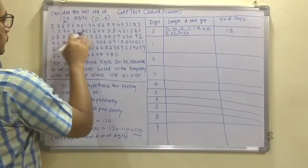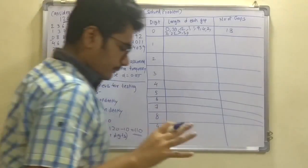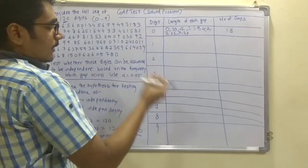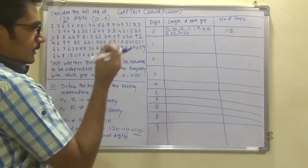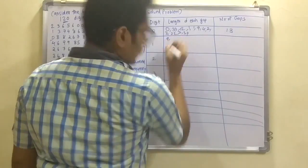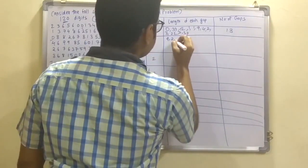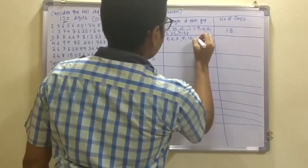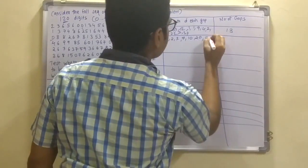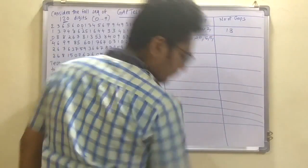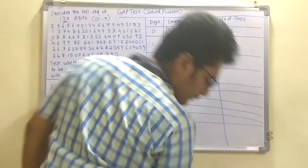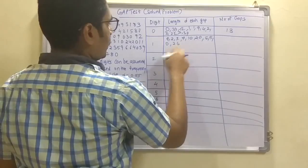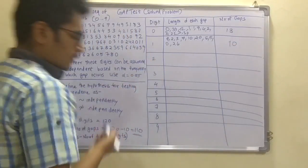Similarly for digit 1, you calculate when the first 1 appears and then successively find each subsequent gap. The gap lengths for digit 1 are: 9, 2, 7, 7, 10, 20, 5, 5, 0, 26. The total number of gaps for digit 1 is 10.